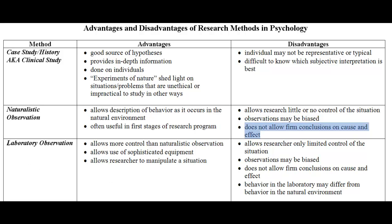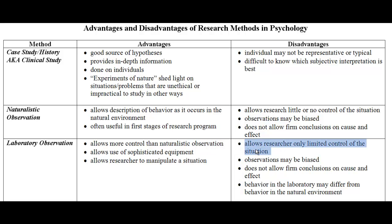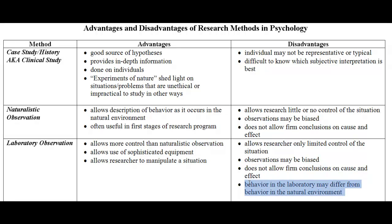Researchers might turn to laboratory observation, which allows more control than naturalistic observation, allows use of sophisticated equipment, and allows the researcher to manipulate the situation. One of my favorite informal laboratory observations is the Candid Camera series, where they set up people in certain circumstances and see what plays out. Disadvantages: it allows only limited control, observations may be biased, it does not allow firm conclusions on cause and effect, and behavior in the lab may differ from the natural environment — we know that when we're being watched, we typically behave differently.